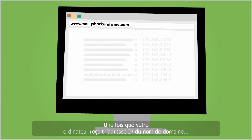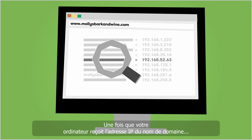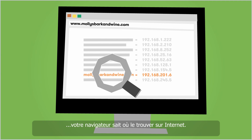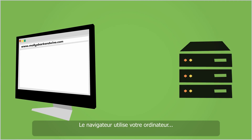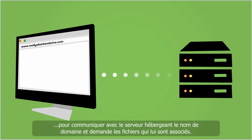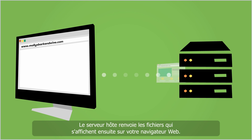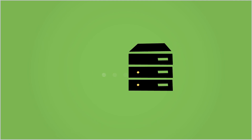Once your computer has the IP address for the domain name, your browser knows where to find it on the Internet. Your browser uses your computer to communicate with the server where the domain name is hosted and requests any associated files. The host server returns the files, which then display in your web browser.